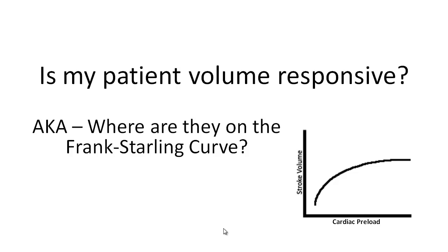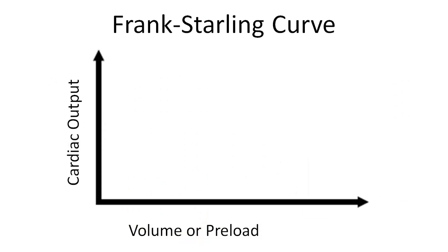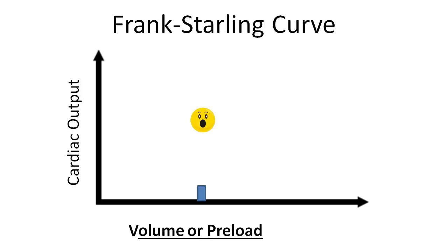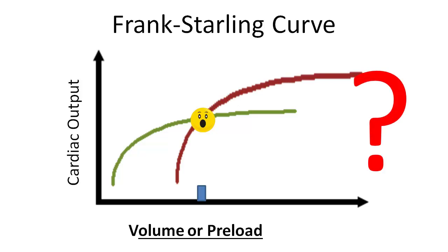As we discussed in the last video, central venous pressure, or CVP, is not a good measure of volume responsiveness. The reason CVP is a poor measure is because it only measures volume or preload as a static variable in one spot, and one data point gives relatively little information on the patient's volume responsiveness.